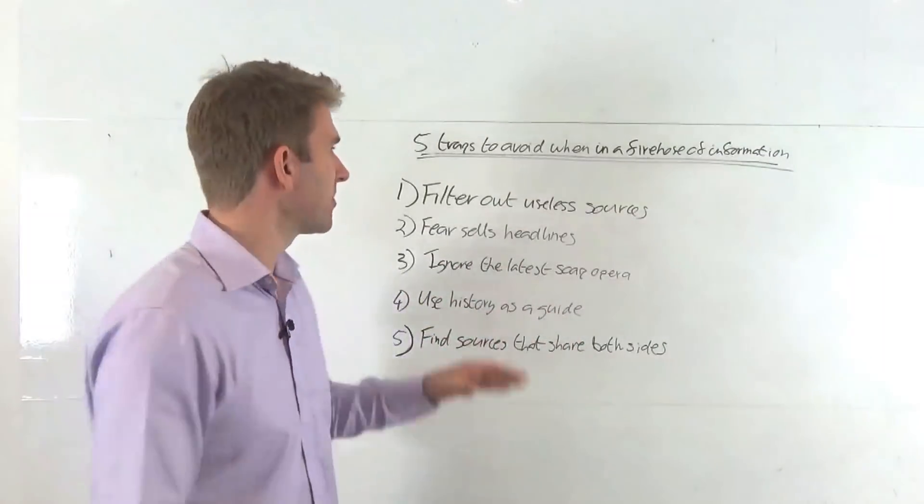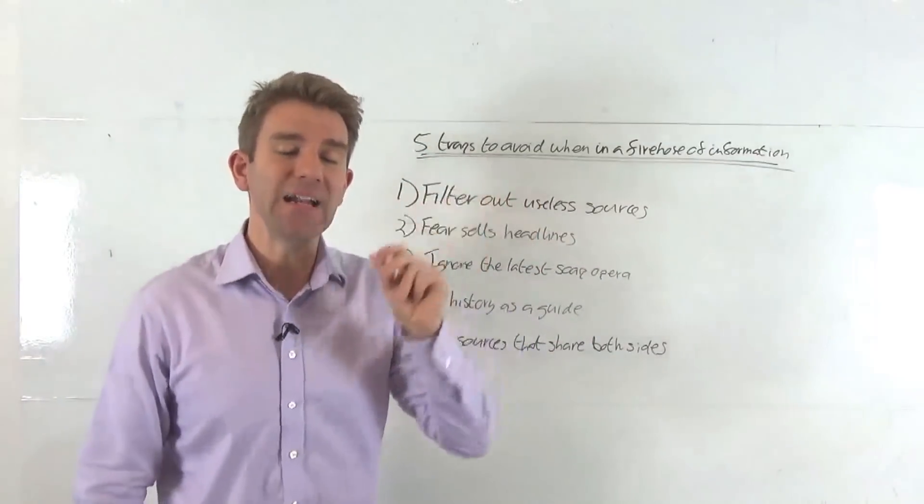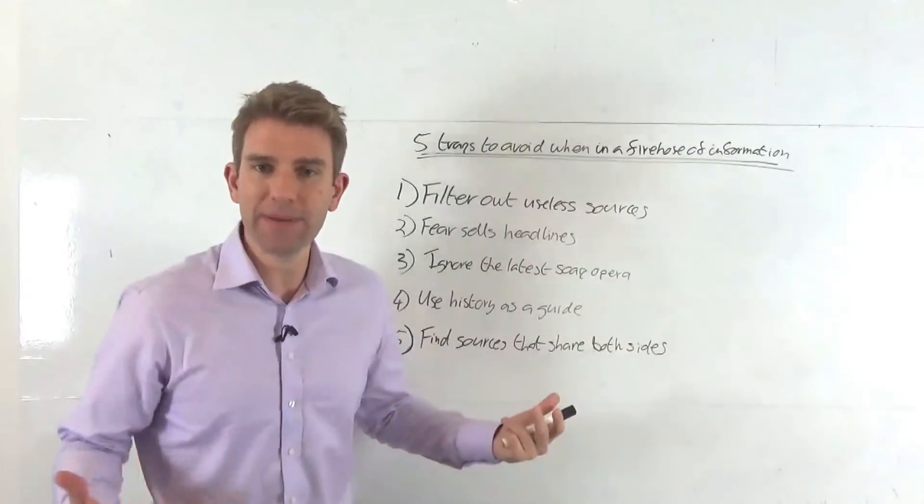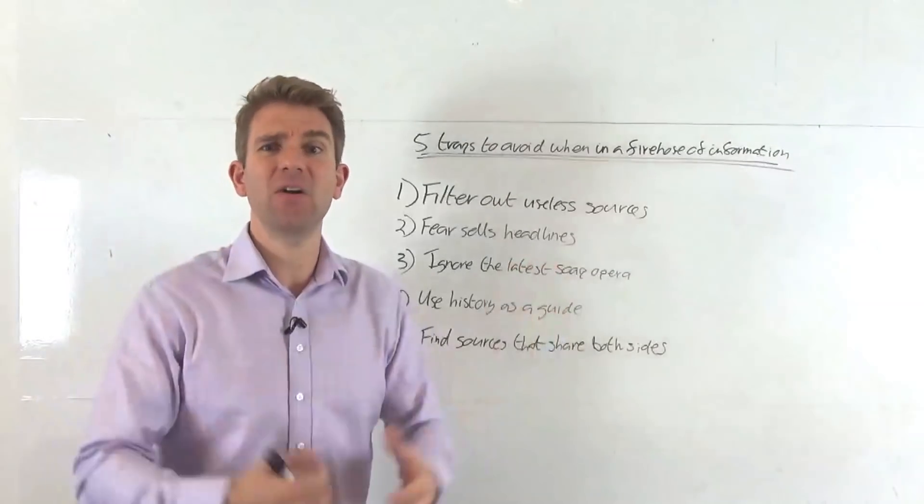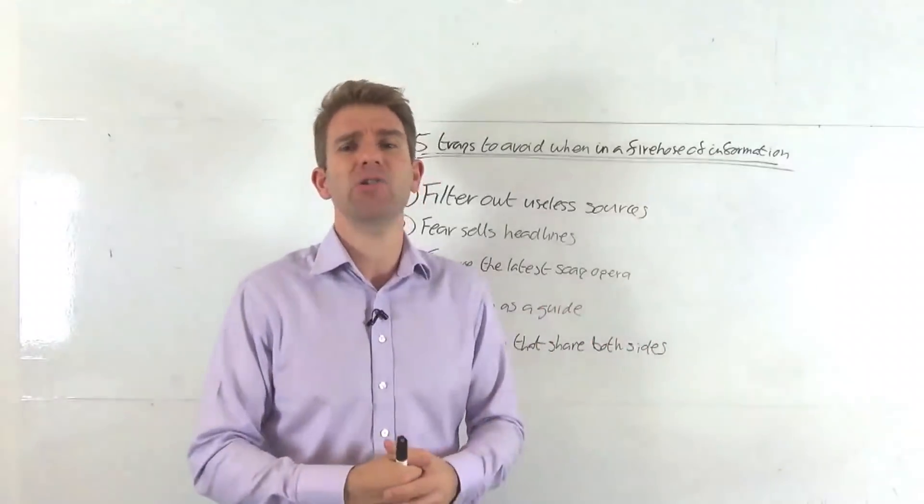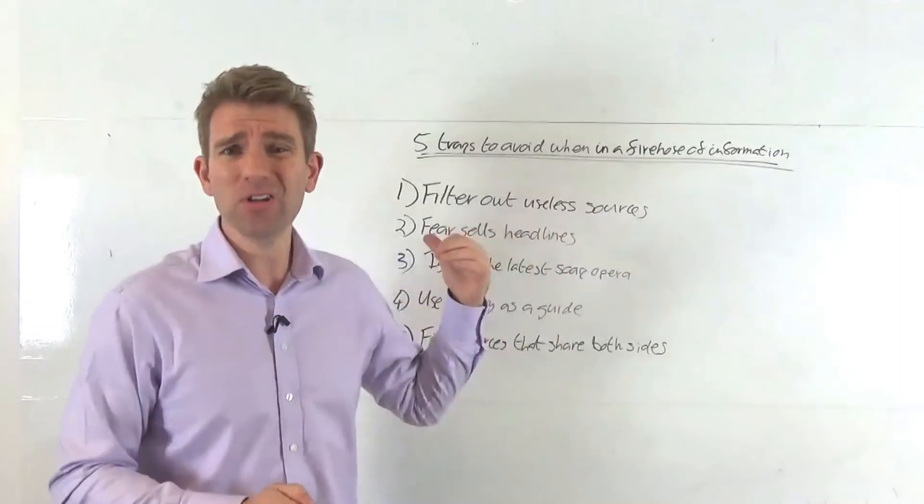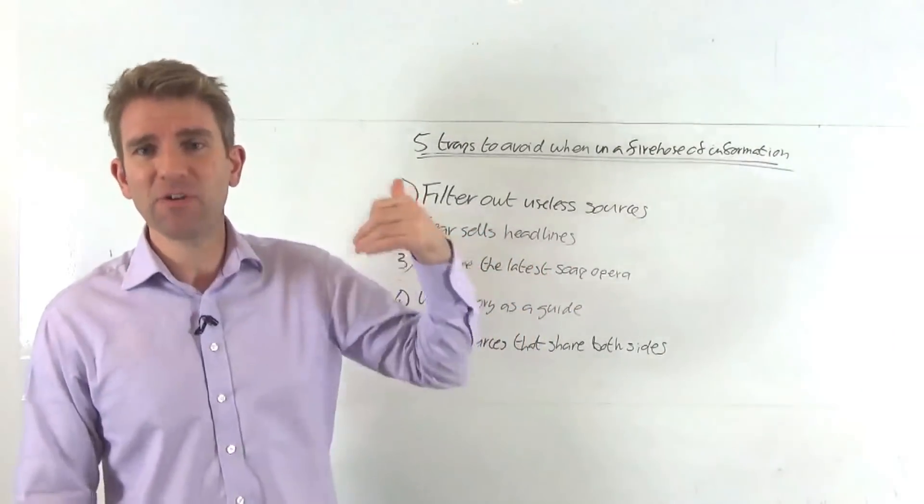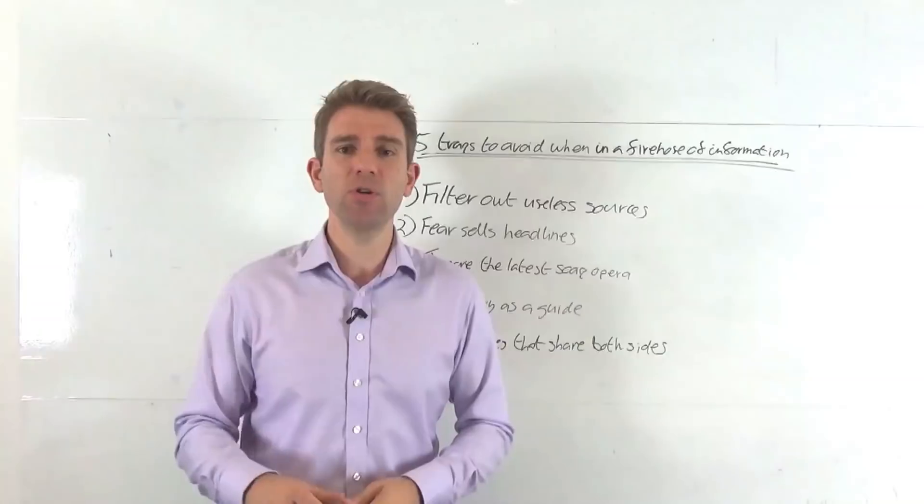The second one: fear sells headlines. The trap is that you look at the headline and you take it at face value. So markets might be down a few percent off the highs and there'll be a massive headline that says the markets are in a tailspin, they're getting smashed. The same with the pound—the pound slides aggressively. And you just look at the chart and think, hang on a second, it's back to where it was on Monday.